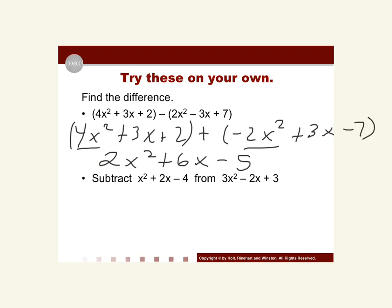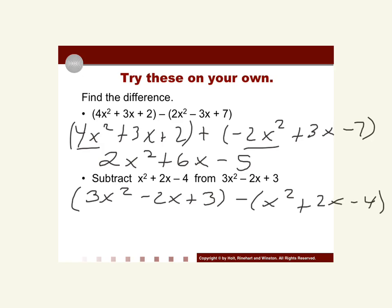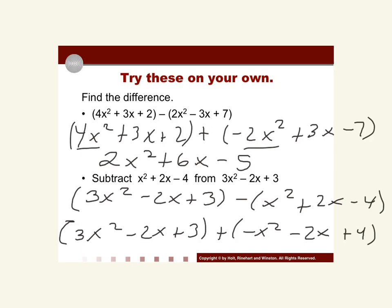This last one is a little trickier because it says 'subtract x² + 2x - 4 from 3x² - 2x + 3.' That means 3x² - 2x + 3 comes first, then we subtract x² + 2x - 4. Changing subtraction to addition: 3x² - 2x + 3 + (-x²) + (-2x) + 4. Combining like terms: 2x², then -2x + (-2x) = -4x, and 3 + 4 = +7. Final answer: 2x² - 4x + 7.